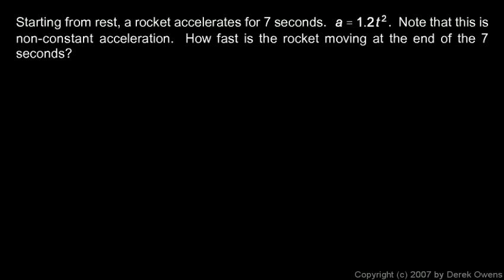Let's make just a quick sketch. The acceleration is going to look something like this. Acceleration is a function of time. It's going to be some kind of parabola. And we want to go from 0 to 7. And we're trying to find this area under the graph from 0 to 7. That will be the change in velocity. The area under the acceleration graph is the change in velocity. And if it starts at rest, the change in velocity will be how fast it ends up moving.